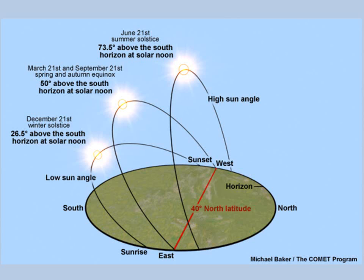This image illustrates how the angle of the sun on the Earth's surface changes with the seasons at the mid-latitudes of the Northern Hemisphere. On June 21st, the sun angle is very high and is 73.5 degrees above the horizon at solar noon. The sun does not have to travel through as much atmosphere and is intense.